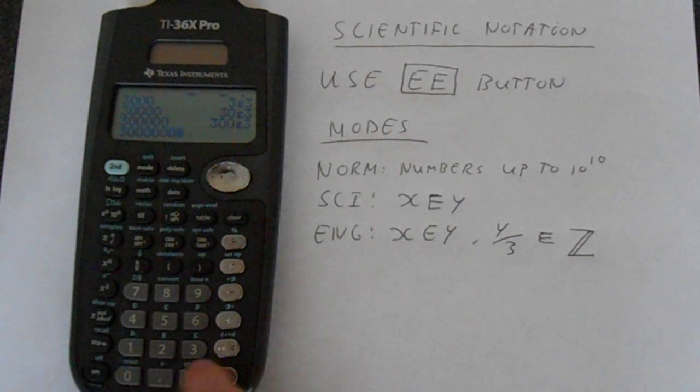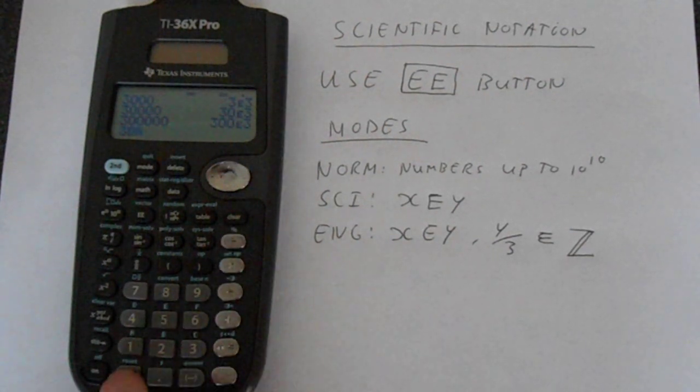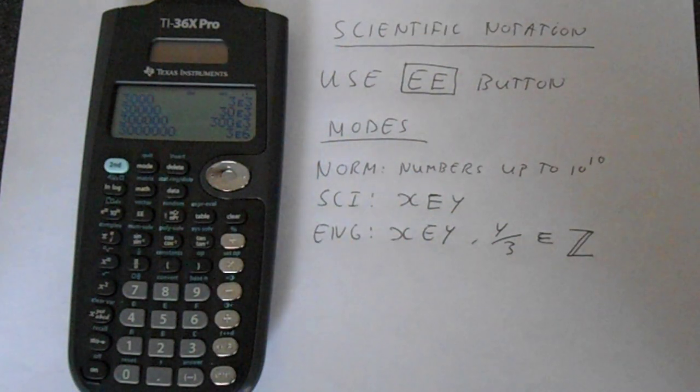And you should spot the pattern. See, and then this one will get that right. That one will go 3 to the 6. So this power is always divisible by 3.